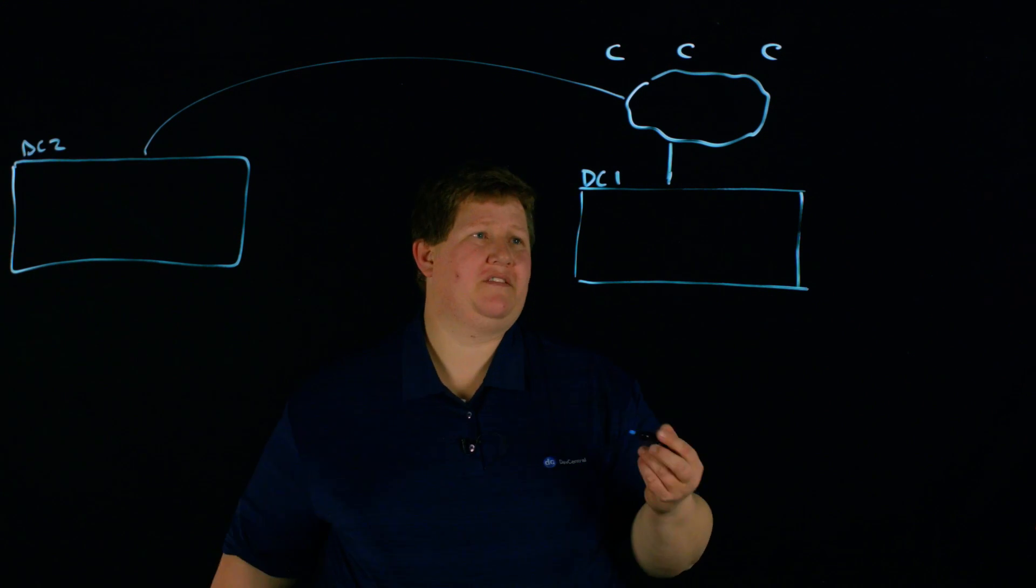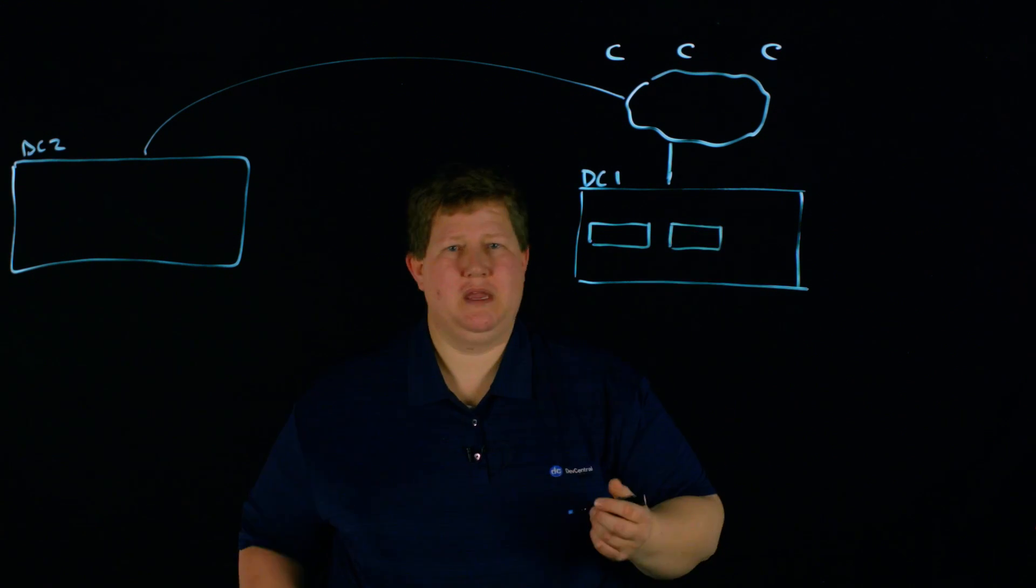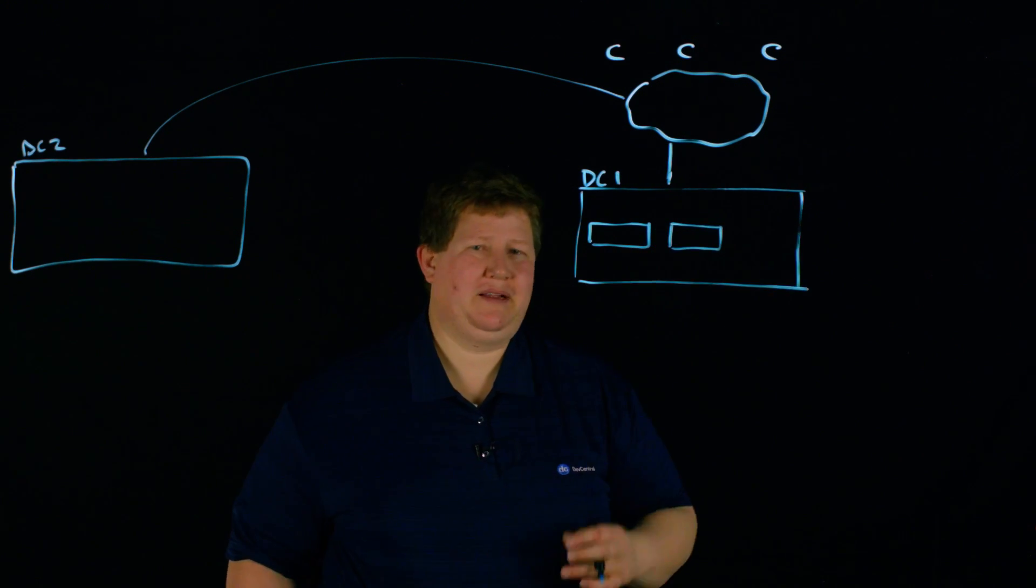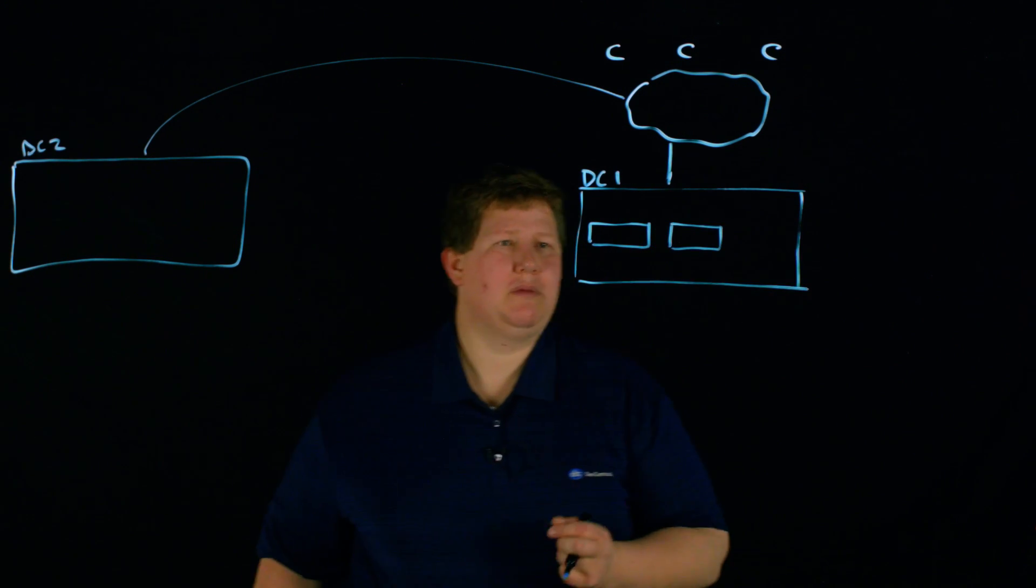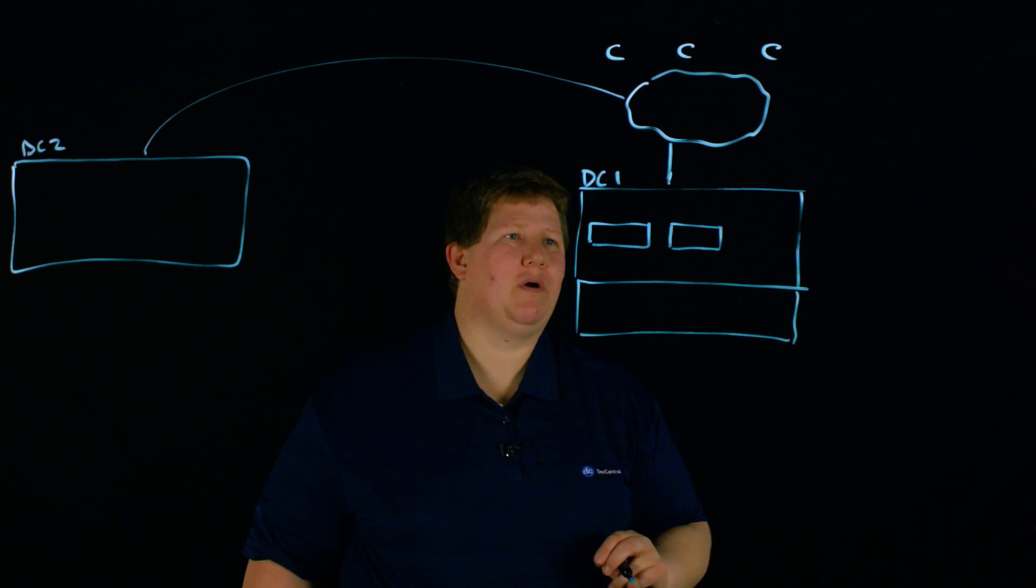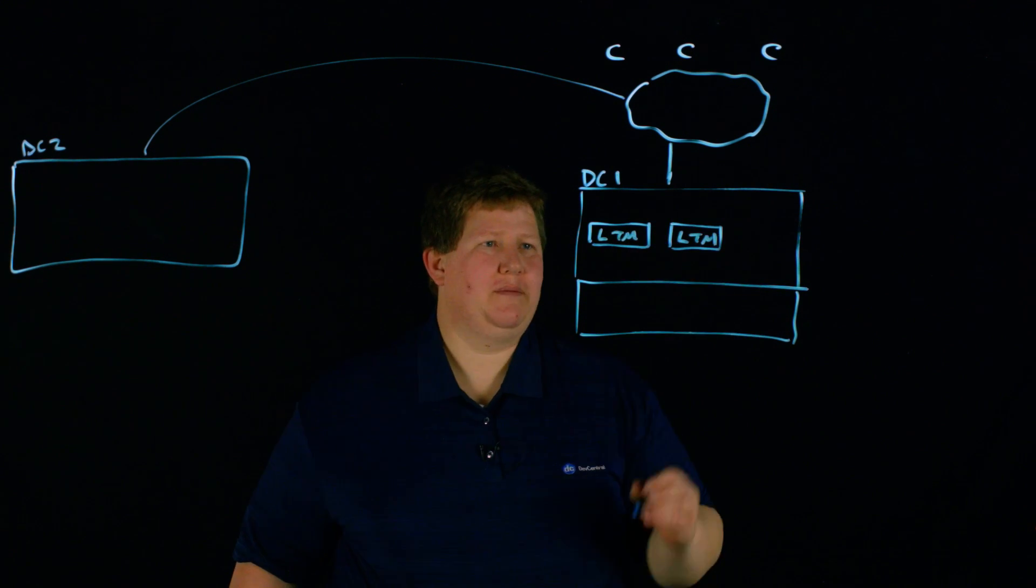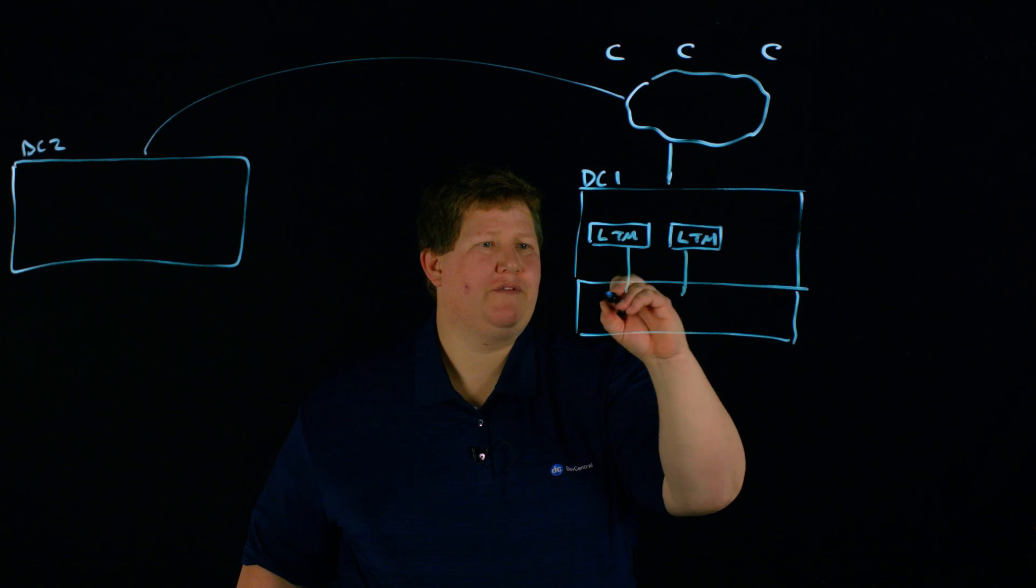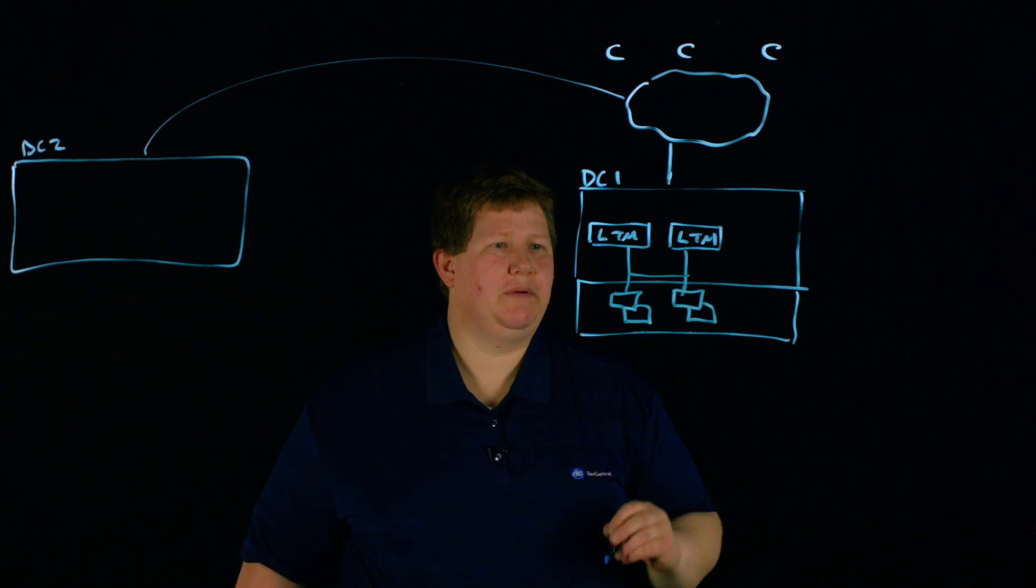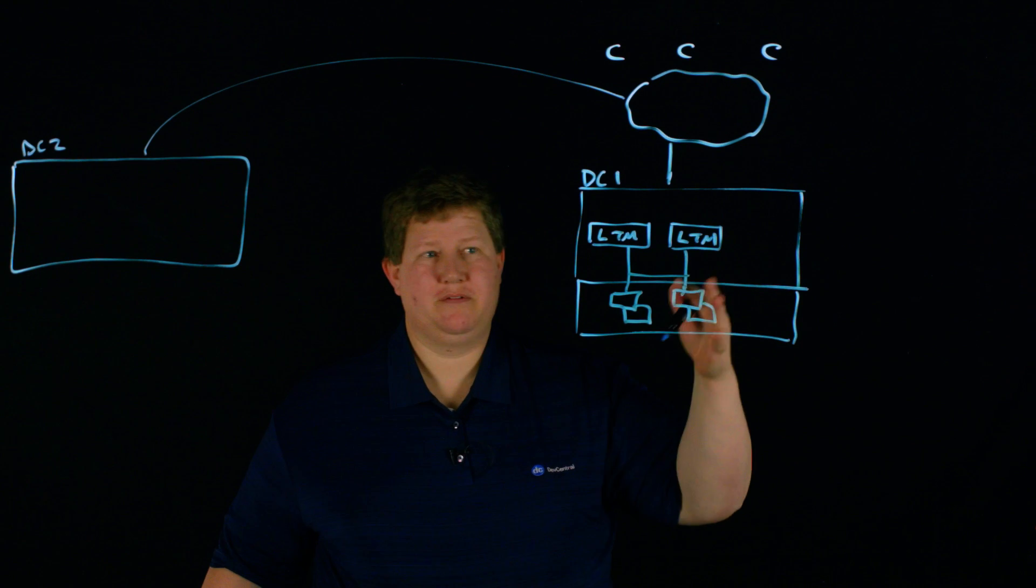In any particular data center, you have your Local Traffic Manager devices in either an HA pair, or you have a device cluster where you have many active and a standby, whatever your scenario is. So you have your infrastructure layer here. You probably have some routers and firewalls in here, and you'll have your LTMs. Those connect down through infrastructure to your web farms, so any number of web farms in here, say this is hundreds of servers or whatever.